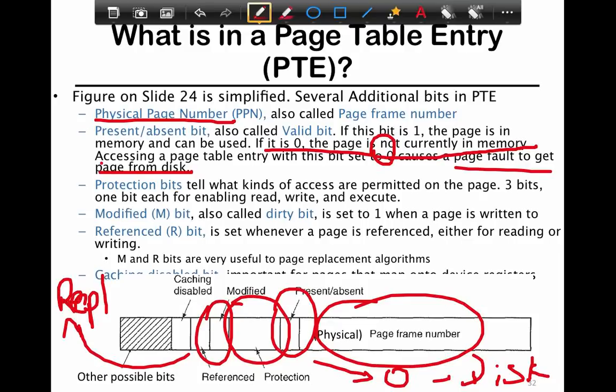You have to have some idea which pages are more important than others. The reference bit essentially indicates that if it was set recently, then it was used in the most recent check, and hence it's pretty important. Both modified and reference bits are useful for replacement algorithms.